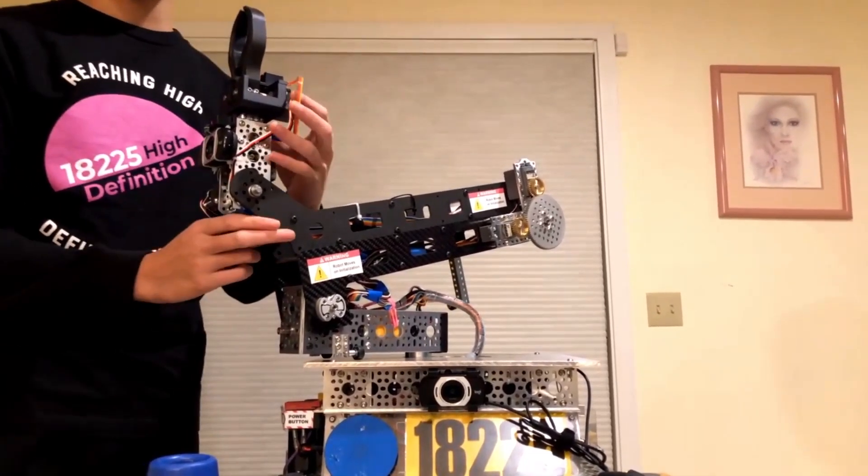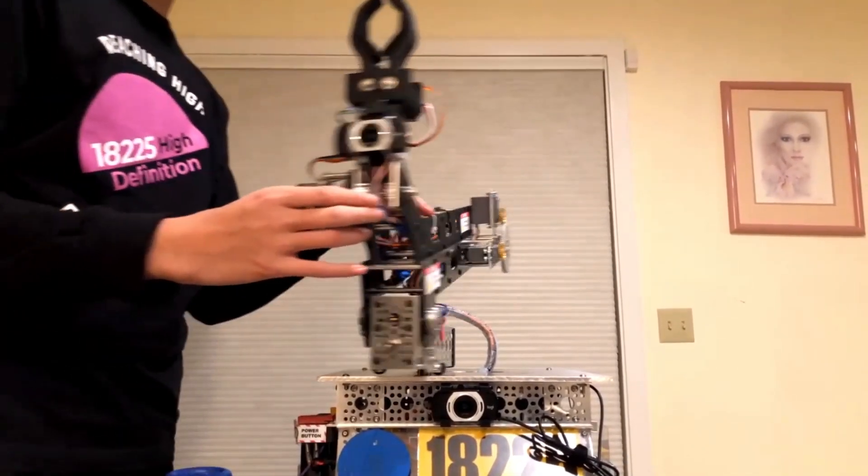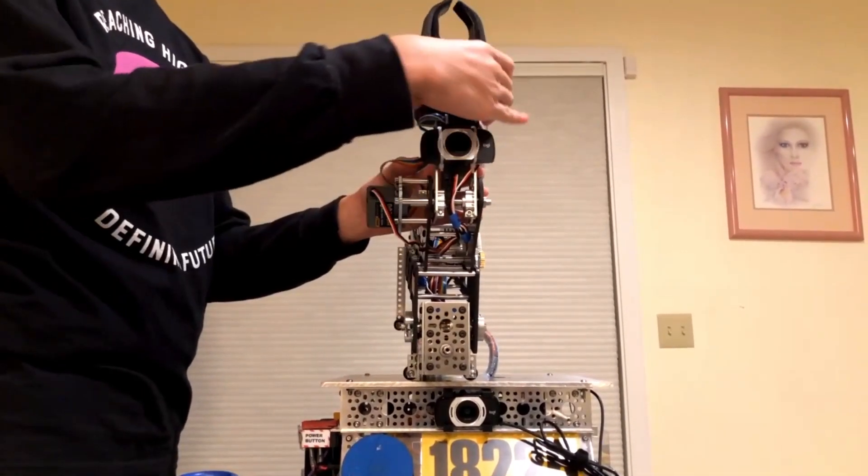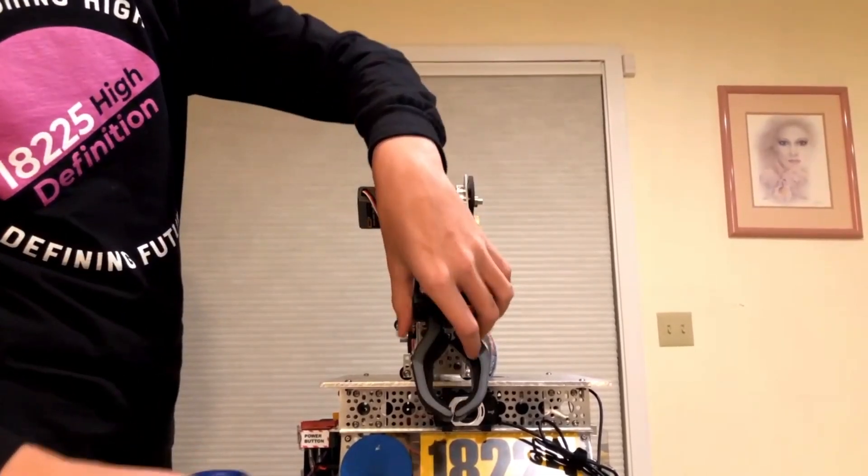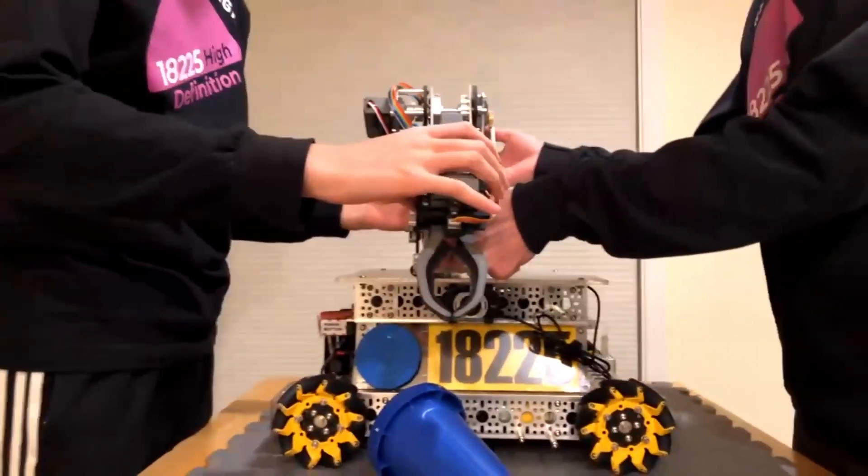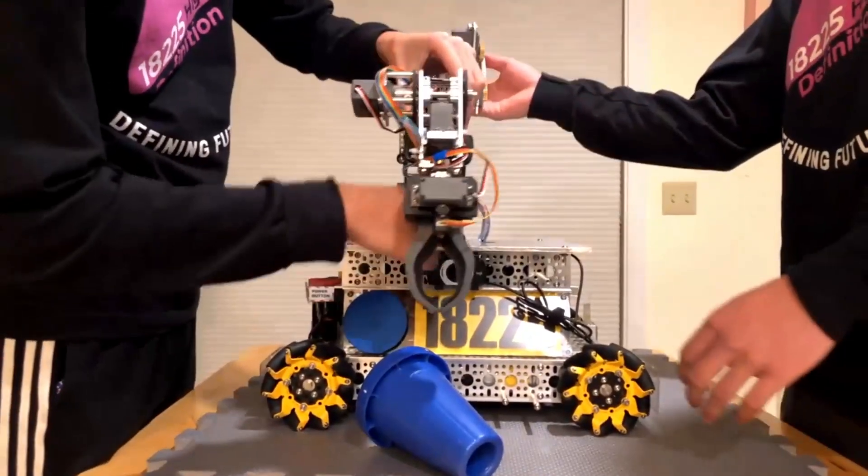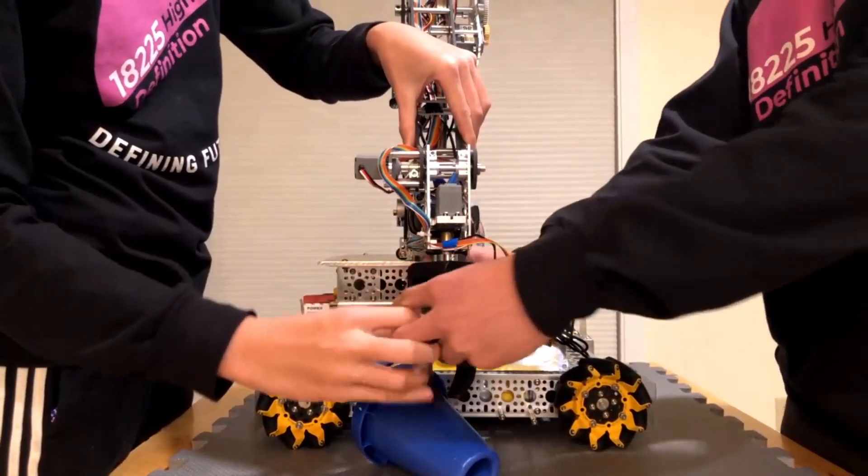And then once it's detected, the cone can be flipped onto the pole. And then lastly, we have this other one right here, which is basically to adapt to any fallen cone. So say the cone was tilted this way, we could move the arm like so, and then tilt the claw and then pick up this way.